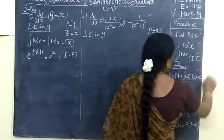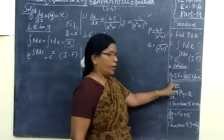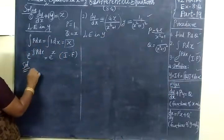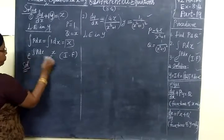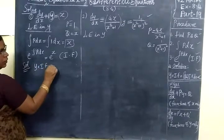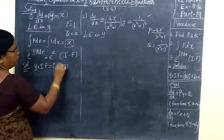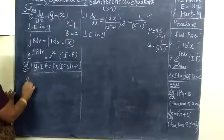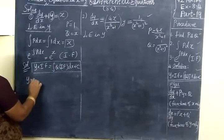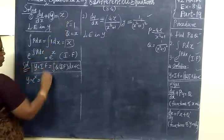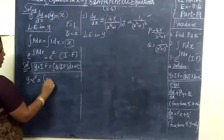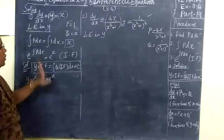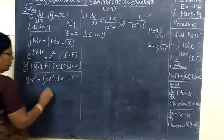Next we go to the solution. For a linear equation in y, the solution formula is: y into integrating factor equals integral of Q into integrating factor dS plus C. Substituting, y times e to the power S equals integral of Q, where Q equals x, times the integrating factor e to the power S, then dS plus C.